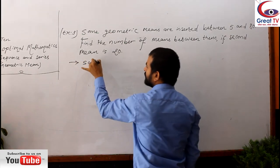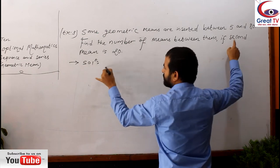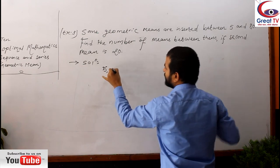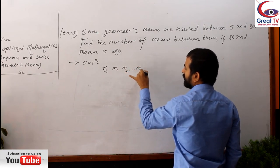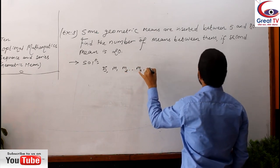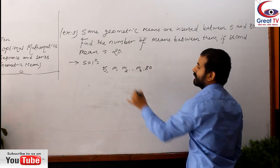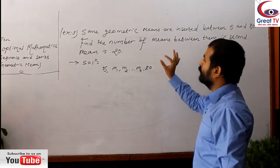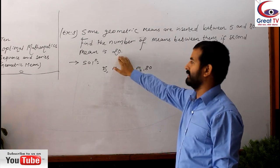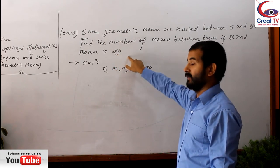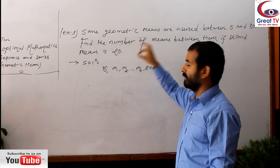So now we can interpret the question by this: starts from 5, and there are some means, we don't know, and it ends to 80. But the choice given is 20, the second mean is 20. So this will help us to find what? This will help us to find the common ratio.